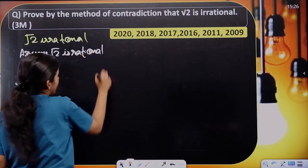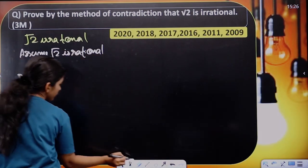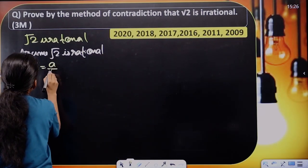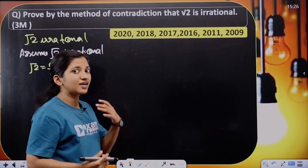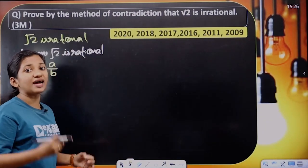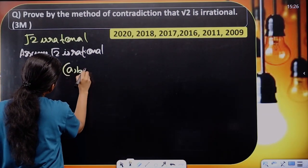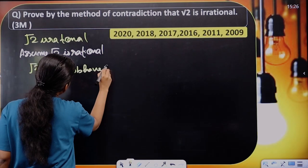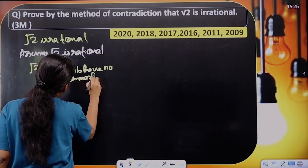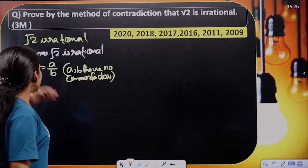The rational number is in P by Q form. So Root 2 equals A by B. This rational number is in A by B form. So A and B have no common factors.